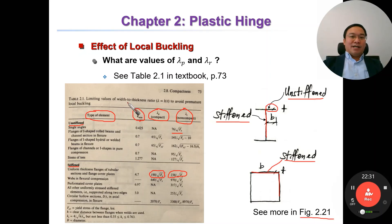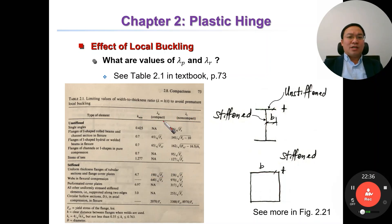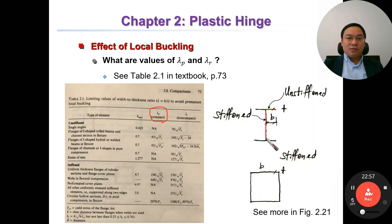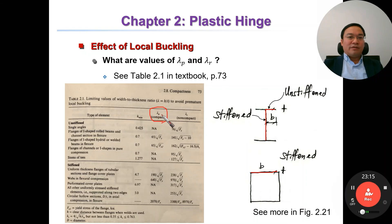Because of local buckling, the section may not be able to reach the full plastic moment MP. For example, a section has a theoretical MP, but due to local buckling the plastic moment is reduced. The amount of reduction depends on the ratio between the thickness and the dimension of the section. We will discuss this in more detail shortly.